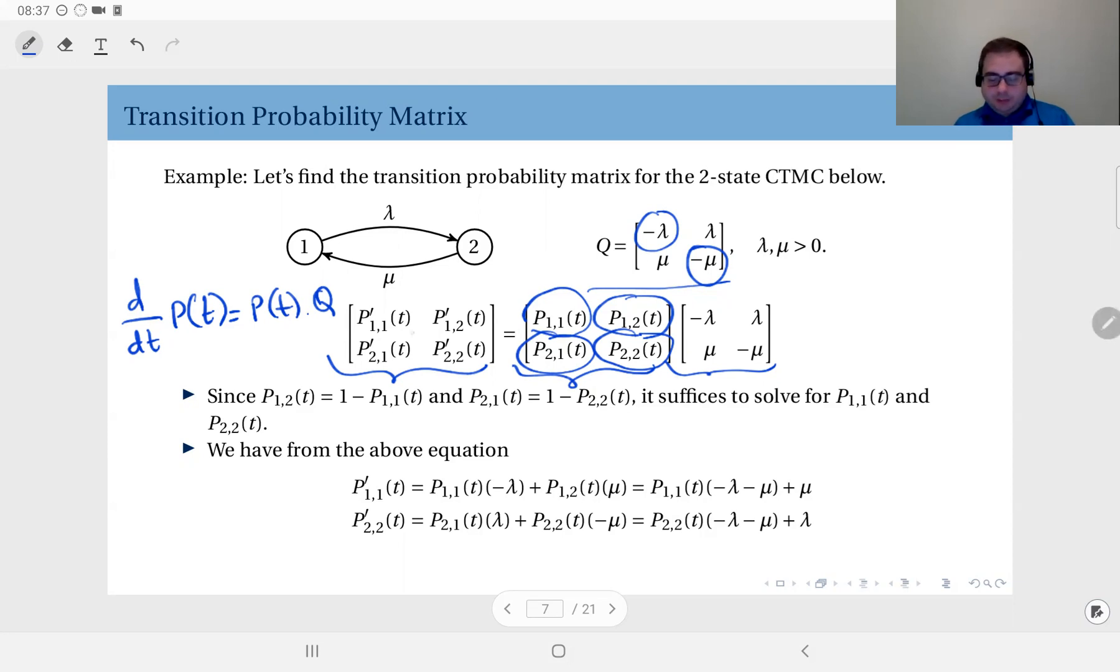Now from this matrix equation, well of course if you expand the components, you have the relationship between P11(t), its derivative and lambda and mu. This is just expanding this product here. And if you just expand it, you can write P11(t) derivative and P22(t) derivative.